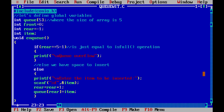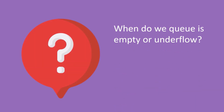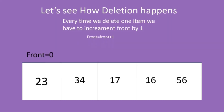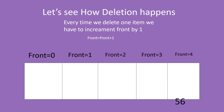Now let's do the same for deletion. The question is: when do we say the queue is empty or underflow? The answer is when rear equals front minus one. To delete items we use the front variable. Every time we delete one item, we increment front by one — deletion happens first, then we increment. Let's delete the items one by one.